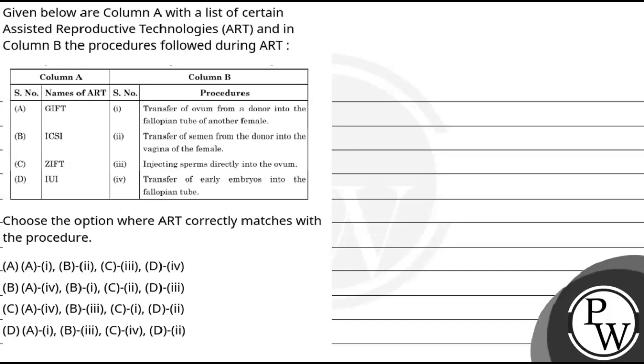Hello, let's read the question. In this question, we have column A with some Assisted Reproductive Technologies, and column B with the procedures. We need to match them and find out the correct option where ART has been matched according to the procedures given.